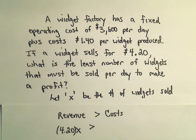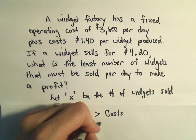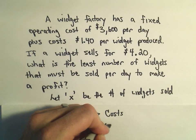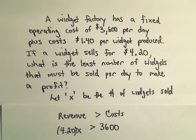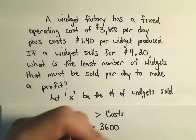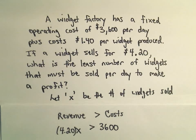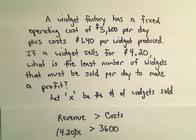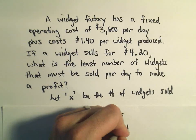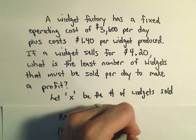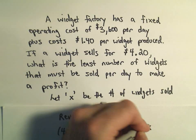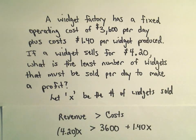Now our costs: we know we've got to pay $3,600 a day — maybe they're renting a big factory, electricity, etc. But then they also have costs involved in making the objects, and it costs $1.40 per each widget produced.